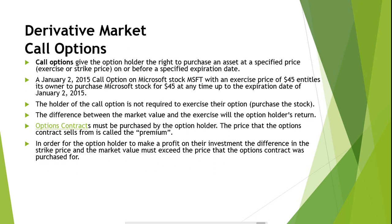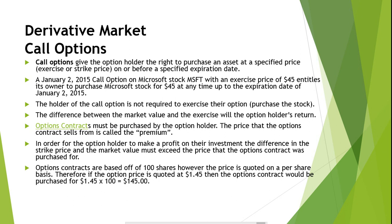Options contracts are based off of 100 shares, however the price is quoted on a per share basis. Therefore, if the option price is quoted at $1.45, then the options contract will be purchased for $1.45 times 100, equaling $145. The options multiplier is the number of shares that the options contract represents, therefore the options multiplier is 100.